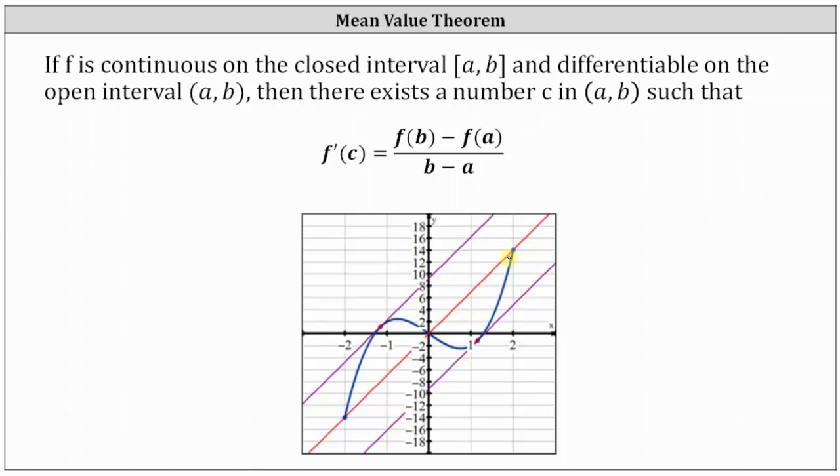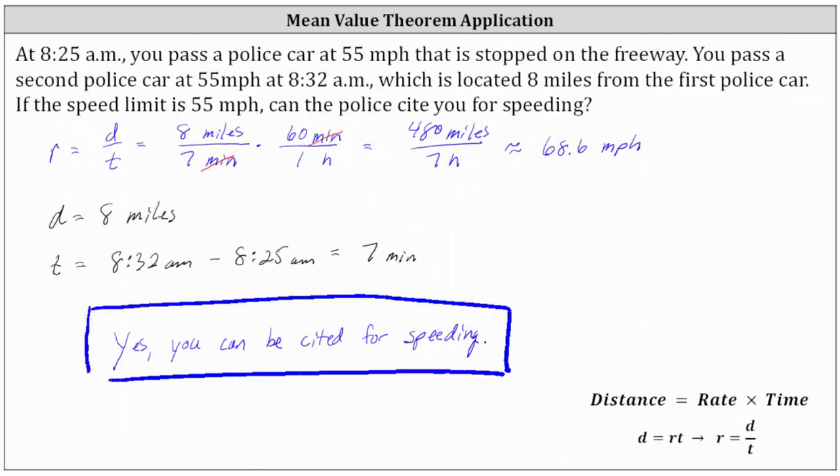Going back to our problem one last time, since your average speed over the time interval was 68.6 miles per hour, there had to be at least one time from 8:25 a.m. to 8:32 a.m. that you were going this speed, which is why you could be cited for speeding. I hope you found this helpful.